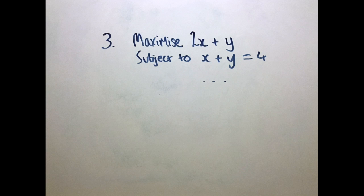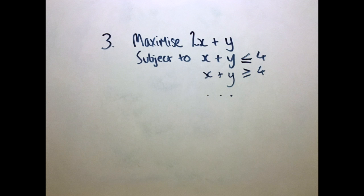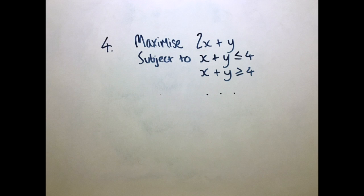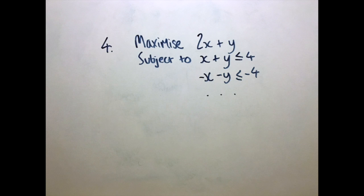If an equality constraint exists, simply replace it with two inequalities. Finally, if there are two inequality constraints with differing signs, just negate one of them, and that's how we convert to standard form.